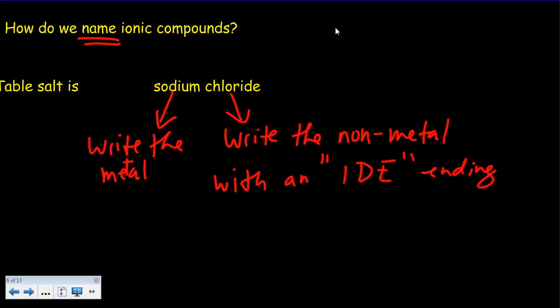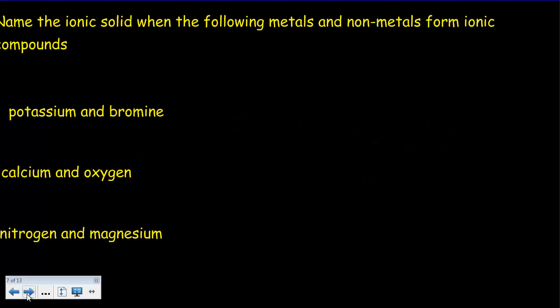Let's see if we can practice that with a few examples. Pause the video now and see if you can write down the proper names for the following combinations of metals and nonmetals. So hopefully you said potassium and bromine would be write the metal first, that's the potassium, and then write the nonmetal but put an IDE ending.